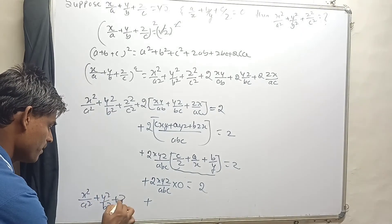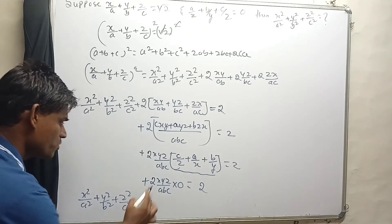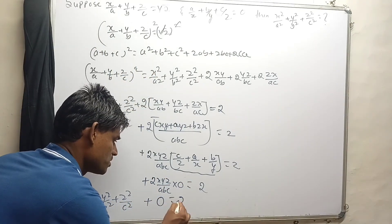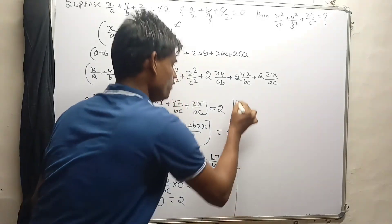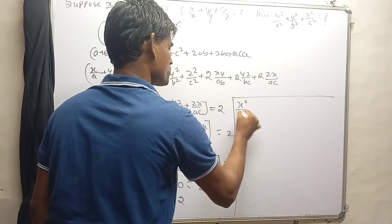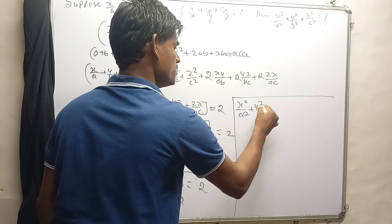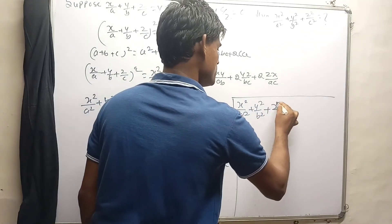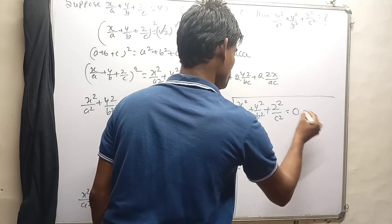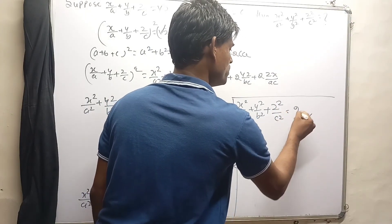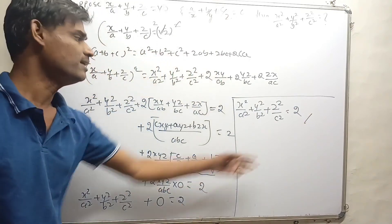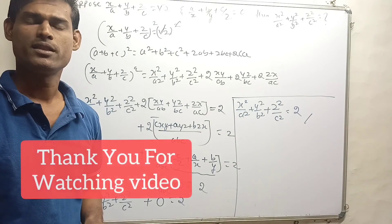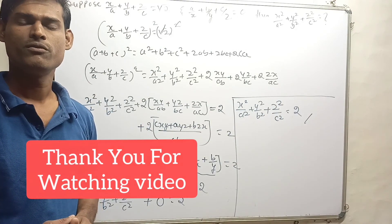Then at last we have x²/a² + y²/b² + z²/c² plus this entire expression which leads to 0, equals 2. So the value of x²/a² + y²/b² + z²/c² equals 2. That is the answer. I hope you got the solution. Thank you for watching the video.